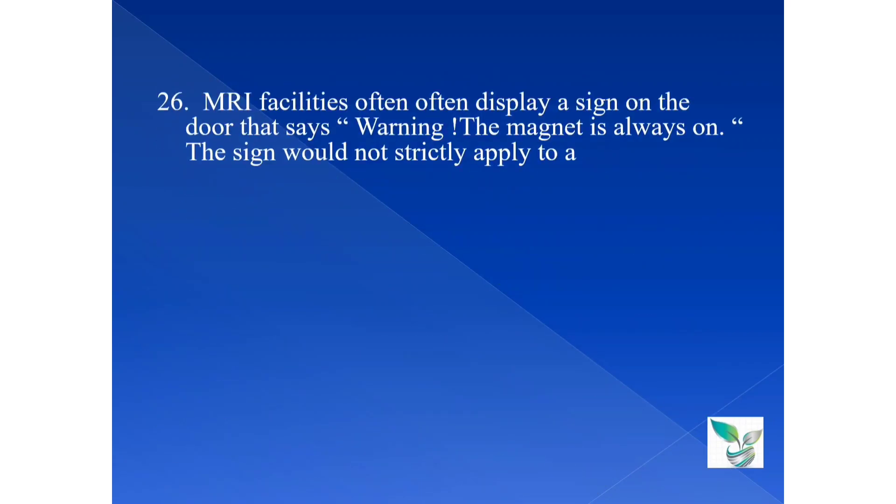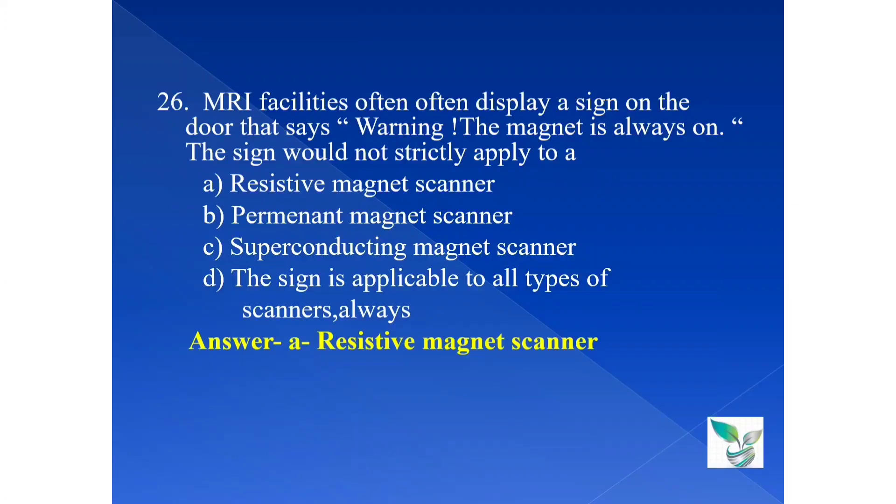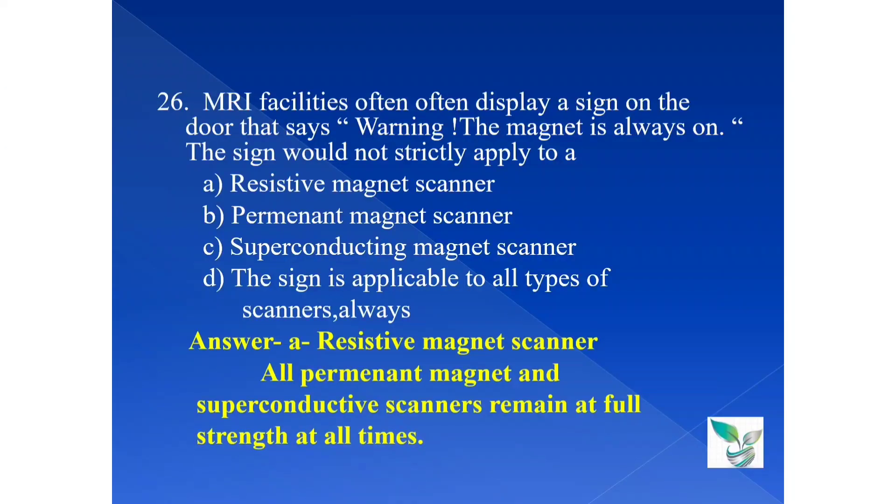Moving on to the next question, question number 26. MRI facility often display a sign on the door that says, Warning, the magnet is always on. So, the sign would not strictly apply to option A, resistive magnet scanner, option B, permanent magnet scanner, option C, superconducting magnet scanner, and option D, the sign is applicable to all type of scanners or weights. The answer is option A, resistive magnet scanner. So, the sign which does not strictly apply to a resistive magnet scanner. Let's see the explanation. All permanent magnet and superconducting scanners remain at full strength at all times.